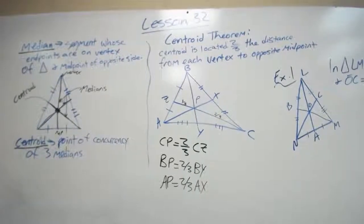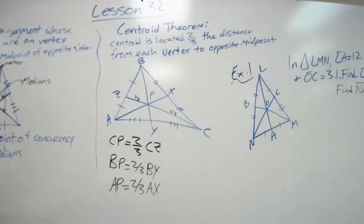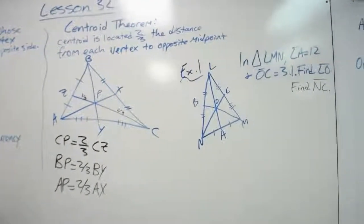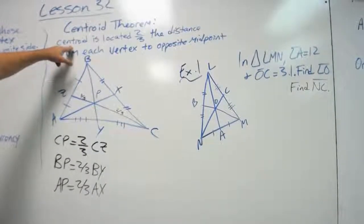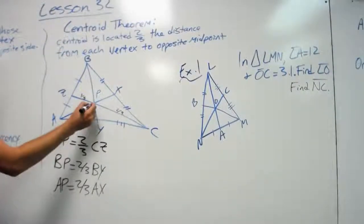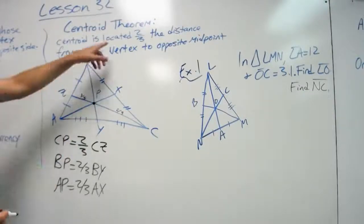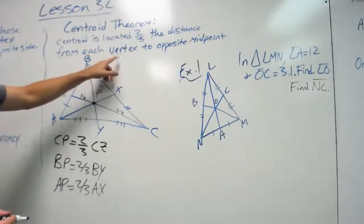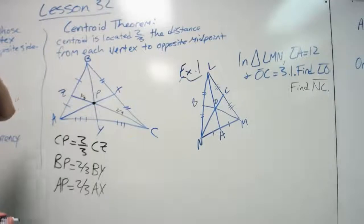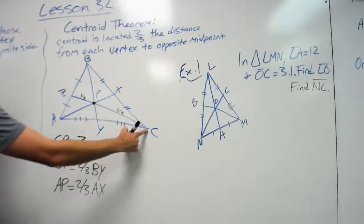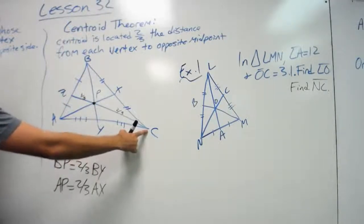So now that we know what the centroid is, let's look at the centroid theorem. Centroid theorem states that the centroid, this point right here, is located two-thirds the distance from each vertex to the opposite midpoint.